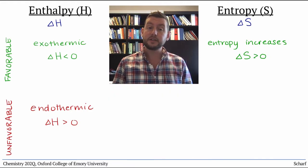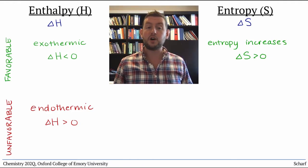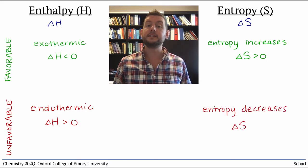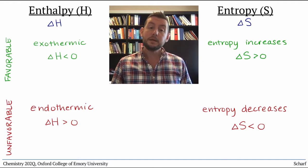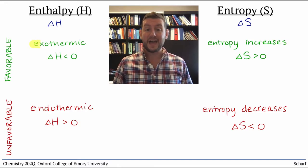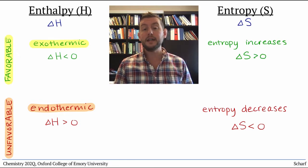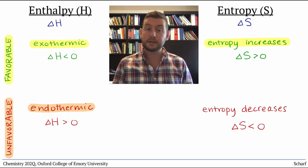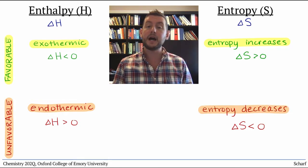As you saw in an earlier video, it is of course possible to expend energy in order to cause a process that is entropically unfavorable — that is, a process for which delta S is negative — to happen. To summarize: processes that are exothermic are enthalpically favorable, while those that are endothermic are enthalpically unfavorable. And processes that result in an increase in entropy are entropically favorable, while those that decrease entropy are entropically unfavorable.